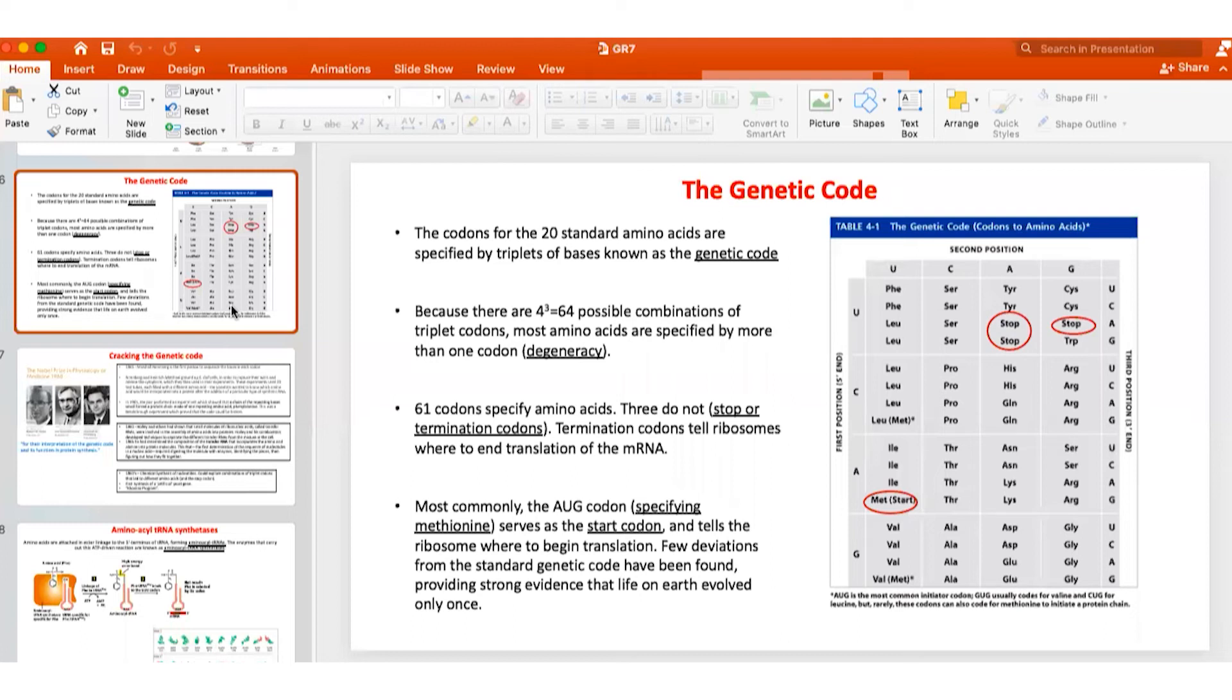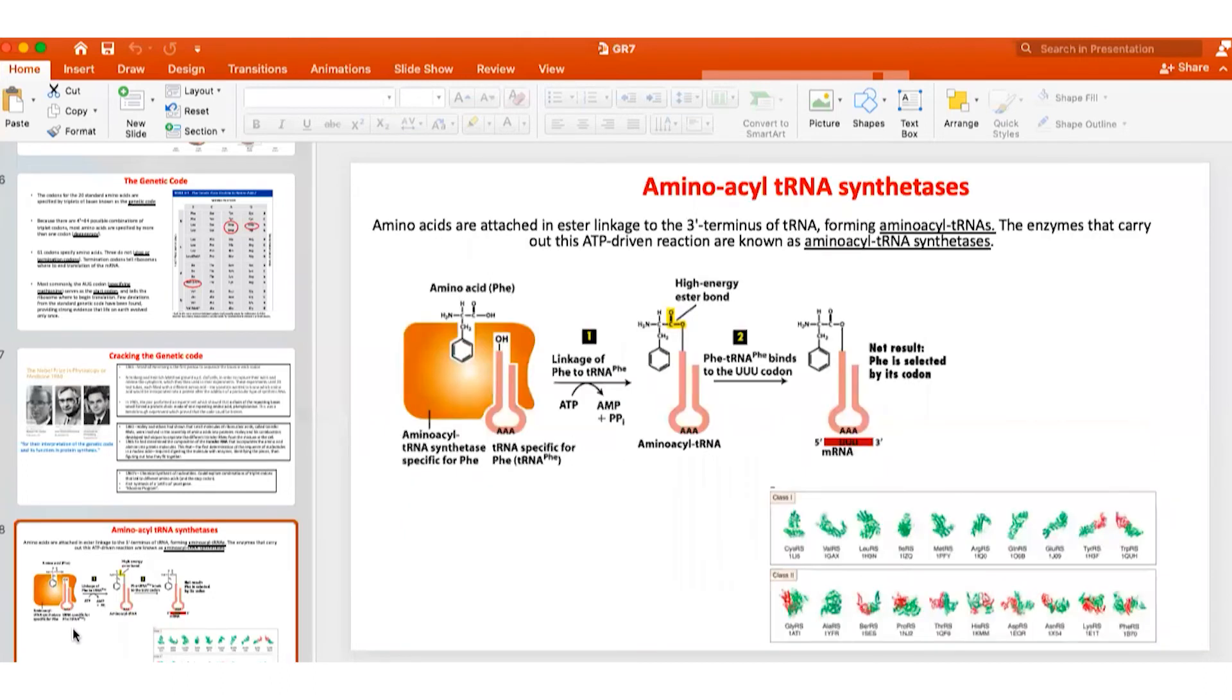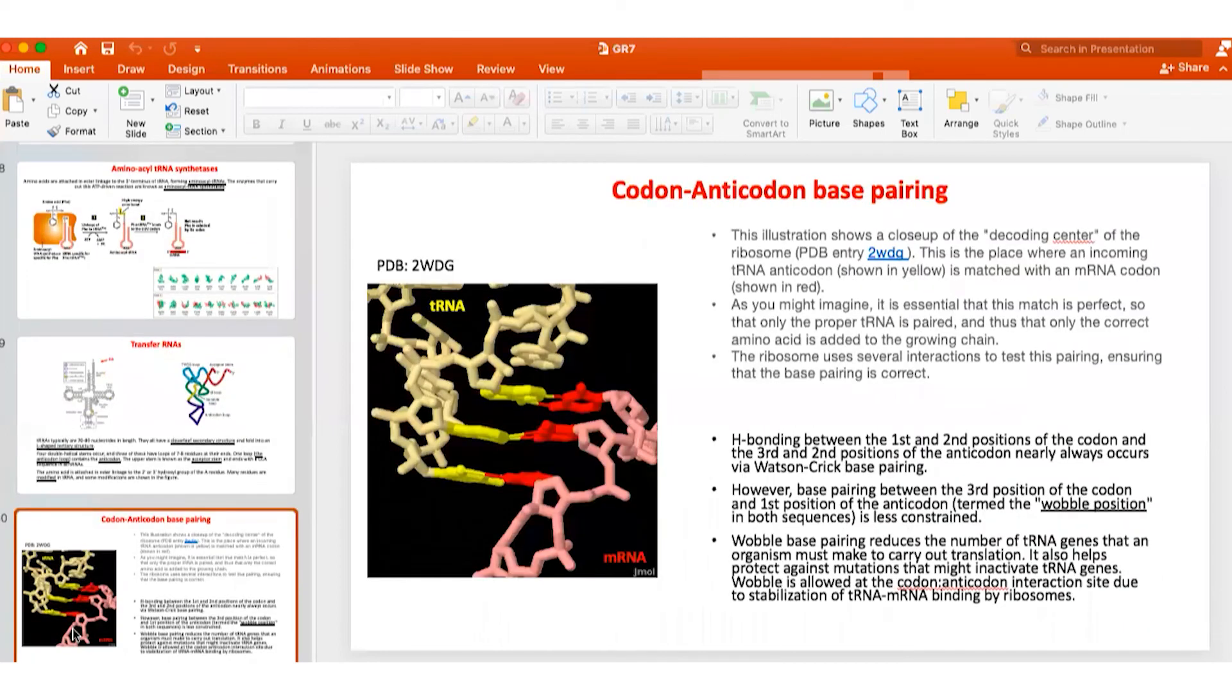What is true is that the first two positions are more important than the third position, and the third position has variability for most amino acids. Proline, for example, can have any one of four nucleotides as the third position. At the level of recognition of the codon-anticodon loop, Watson-Crick base pairing is very well defined, but the ribosome itself seems to be willing to accept a lack of compatibility in the third codon as compared to the first two codons.